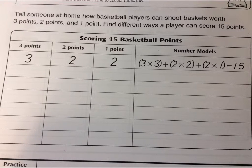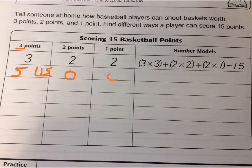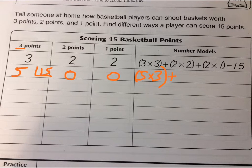We'll zoom in to take a closer look. Let's start with an easy one: what times 3 gives us 15? That would be 5 times 3. If I have 15 from threes, then I have 0 twos and 0 ones, because 15 plus 0 plus 0 is 15. So my number model is 5 times 3 plus 0 times 2 plus 0 times 1 equals 15.